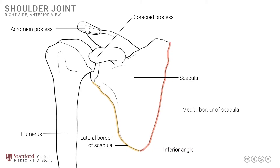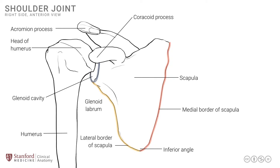There is a third important structure in the superior lateral part of the scapula: the glenoid cavity, labeled here. The glenoid cavity is a relatively shallow cavity, but it articulates with the head of the humerus to form a ball and socket joint. To deepen this cavity, there is a fibrocartilaginous ring known as the glenoid labrum sitting around the circumference of the glenoid cavity, which adds an element of stability.